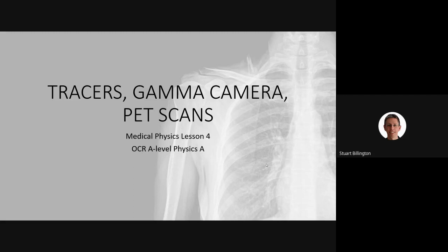Today's lesson is our fourth lesson about medical physics. Whereas the first three lessons have been about X-rays, we're now going to turn our attention to a different type of scanning technique. Today we're going to look at something called a tracer and its imaging machine, which is called the gamma camera, and then this will lead us on to something you might have heard of called a PET scan.